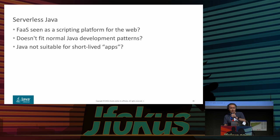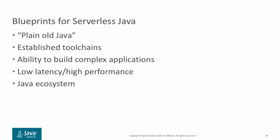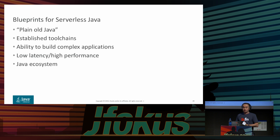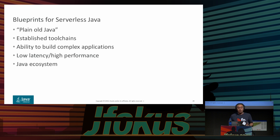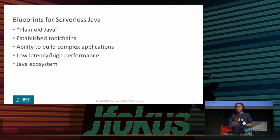I think there's a recipe — a set of features — we need for Java for the cloud and for functions. First, it should be plain old Java. People shouldn't have to learn something new if they're a Java developer doing functions — just use Java, use the same tools you've always used. And I want to be able to build complicated applications. There's a move now to build larger complex applications out of functions combined together. Of course I want it to be fast, and I want to take advantage of the Java ecosystem.